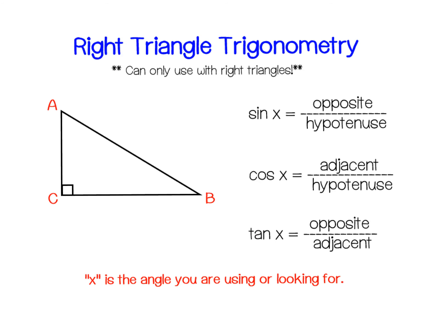The sine of an angle means that you're comparing the opposite side to the hypotenuse. This is why we were doing opposite, adjacent, hypotenuse in the lesson before. The cosine of an angle compares the adjacent side to the hypotenuse, and the tangent compares the opposite side to the adjacent side.